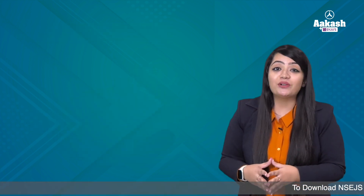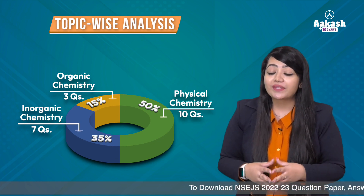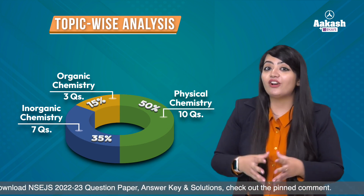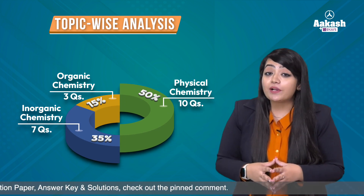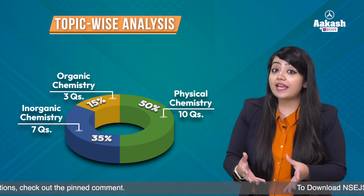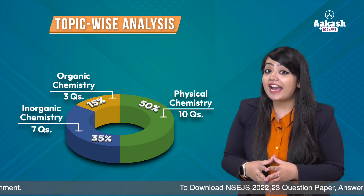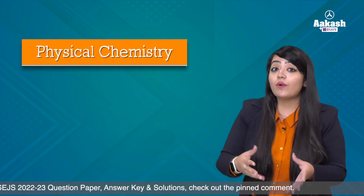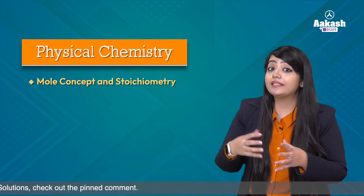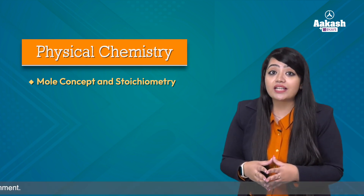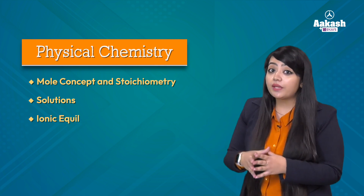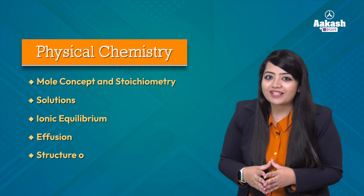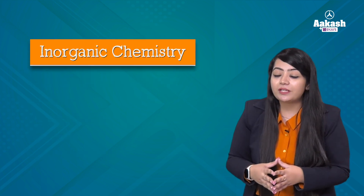Regarding the topic-wise distribution, physical chemistry had more weightage compared to inorganic and organic — 50 percent of the paper came from physical chemistry, followed by 7 questions from inorganic and 3 questions from organic chemistry. In physical chemistry, there were questions based on mole concept and stoichiometry, which were a bit calculative. Questions also came from solutions, ionic equilibrium, effusion, and structure of atom.